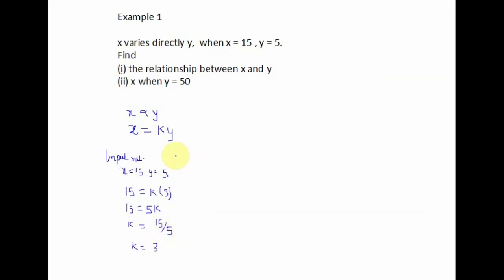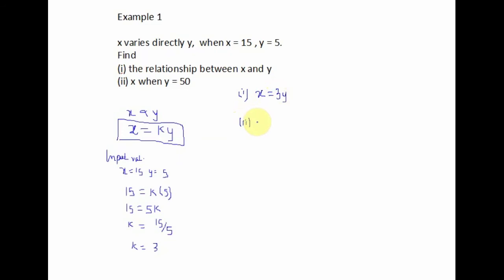Since k is equal to 3, we can now find the relationship between x and y. The relationship is our mathematical formula, and instead of k we substitute our value of 3. So the relationship between x and y is x is equal to 3y. Next, we find x when y is equal to 50.